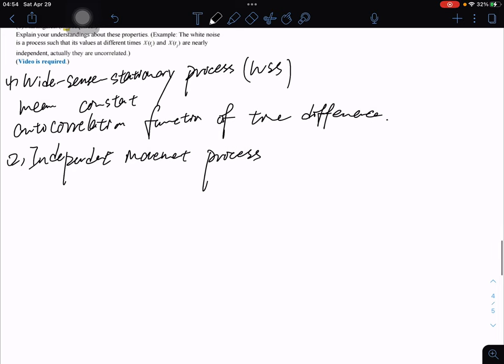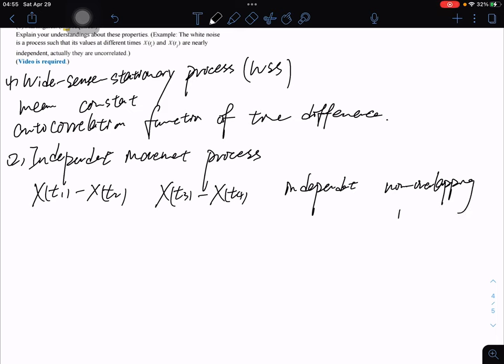What is independent increment process? It is called when X(t1), X(t2), X(t3), X(t4) at non-overlapping intervals are independent.